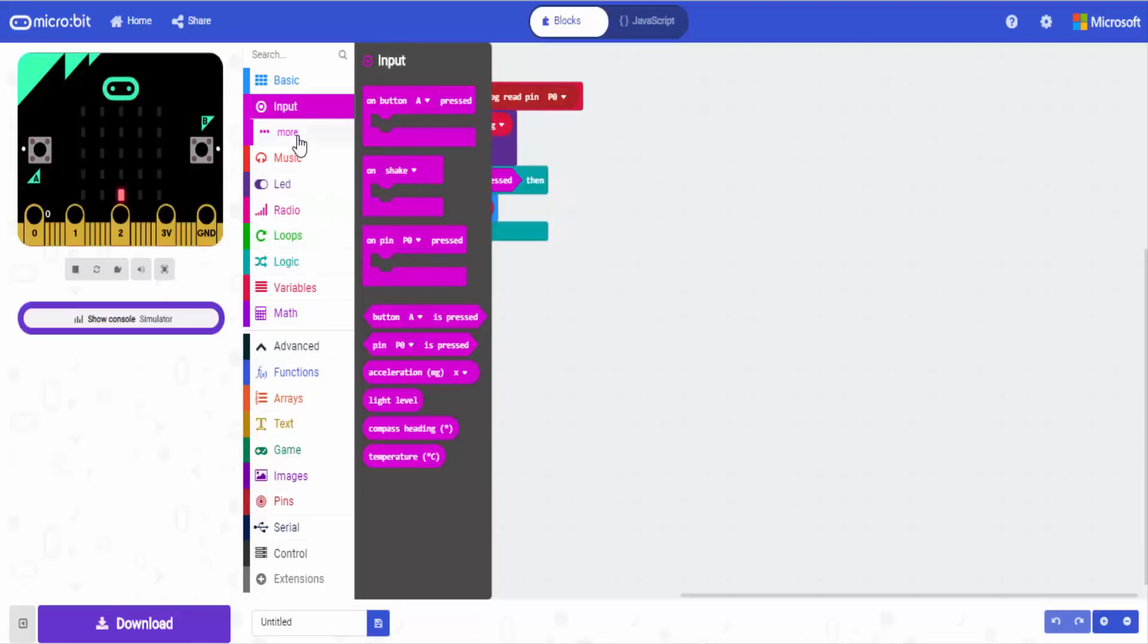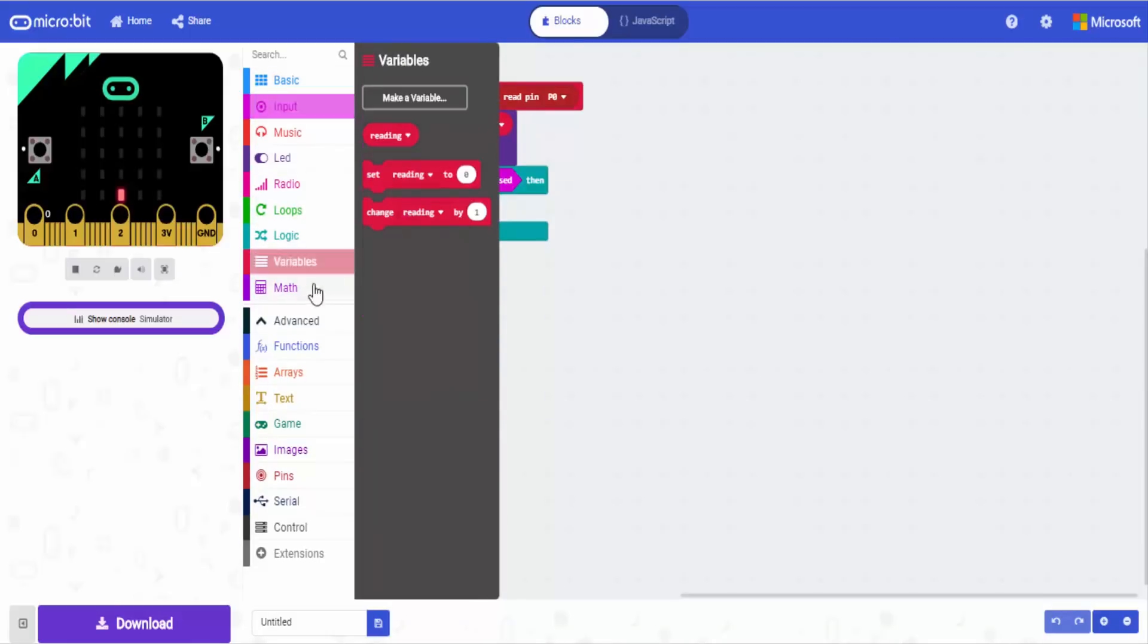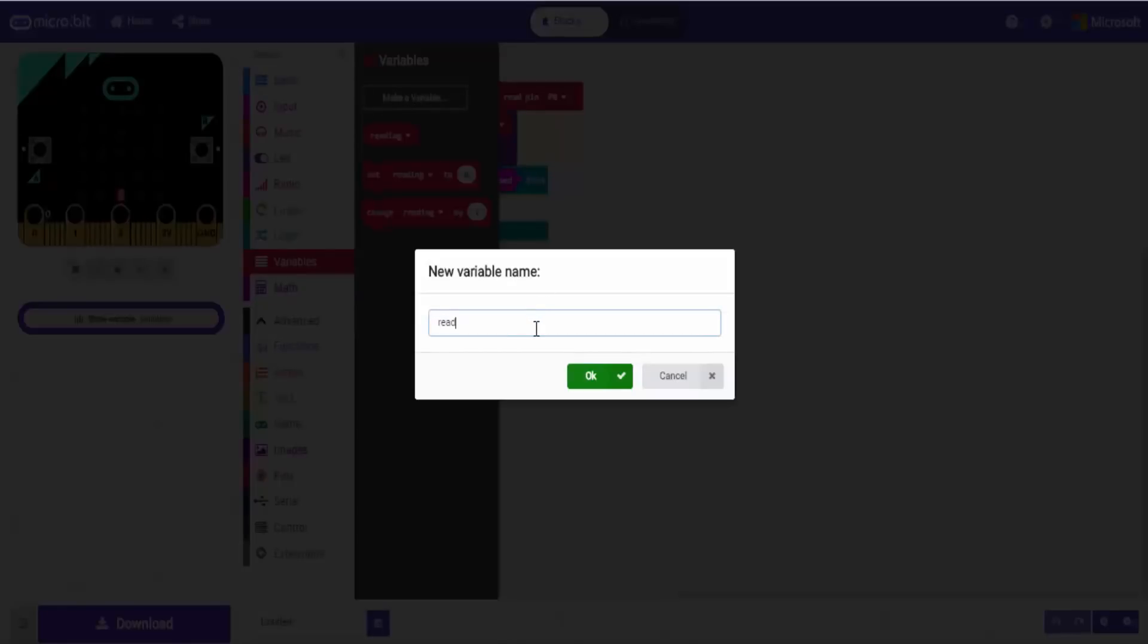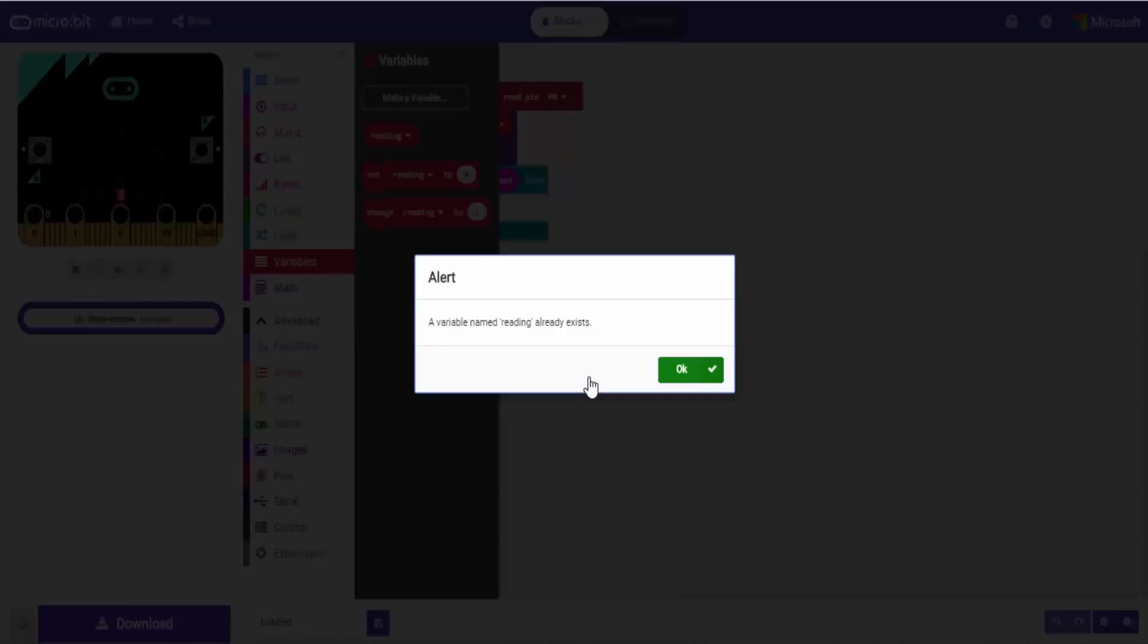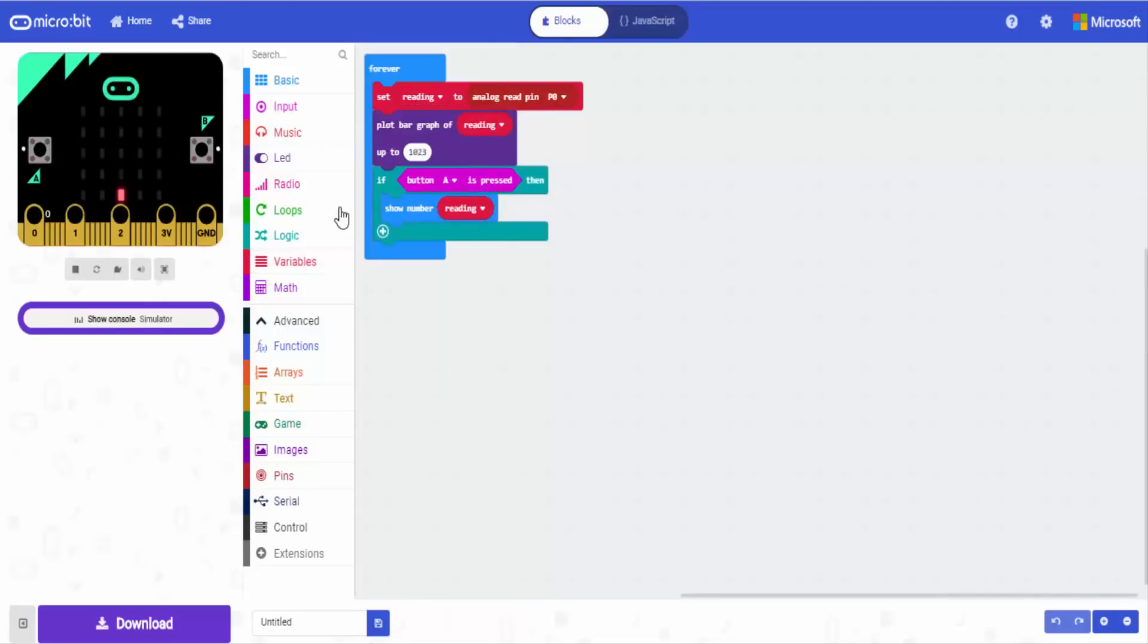When you need to create the variable, all you have to do is go into the right sections and then you can click 'create variable' and it will create the variable for you that can be dragged and dropped around in the rest of the block code.